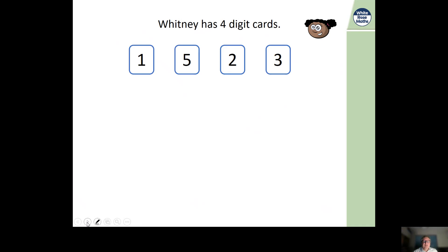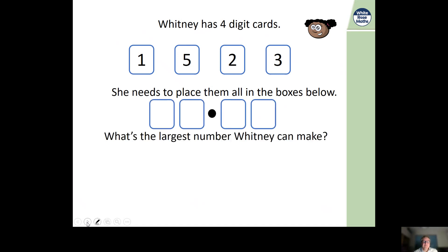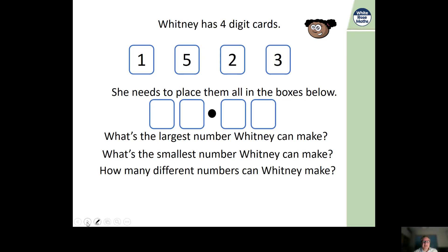So here's Whitney, she's got four digit cards: one, five, two, three. She needs to place them all in the boxes below. What's the largest number Whitney can make? We've done making largest numbers and smallest numbers. You know the strategy. No different really with the decimal place. Give it a go. And what's the smallest number that she can make? How many different numbers can Whitney make? And remember when you have these place cards, she has four digit cards. So she only has one, one, one five, one two and one three. So have a think about those questions. Pause the video.